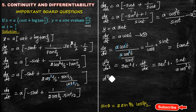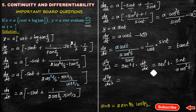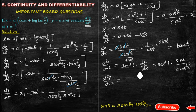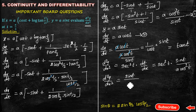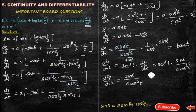Therefore d²y/dx² equals sec²(t) multiplied by dt/dx, which gives sec²(t) into sin(t) divided by [a·cos²(t)]. Since sec²(t) equals 1/cos²(t), this becomes sin(t) divided by [a·cos⁴(t)].